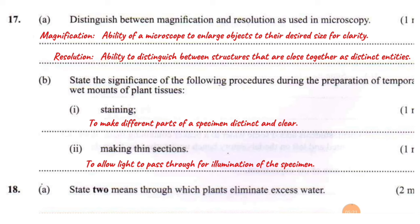Moving on to question 18: state two means through which plants eliminate excess water. Transpiration, guttation, and evaporation. Part B: explain the significance of hair on the human skin during cold weather.